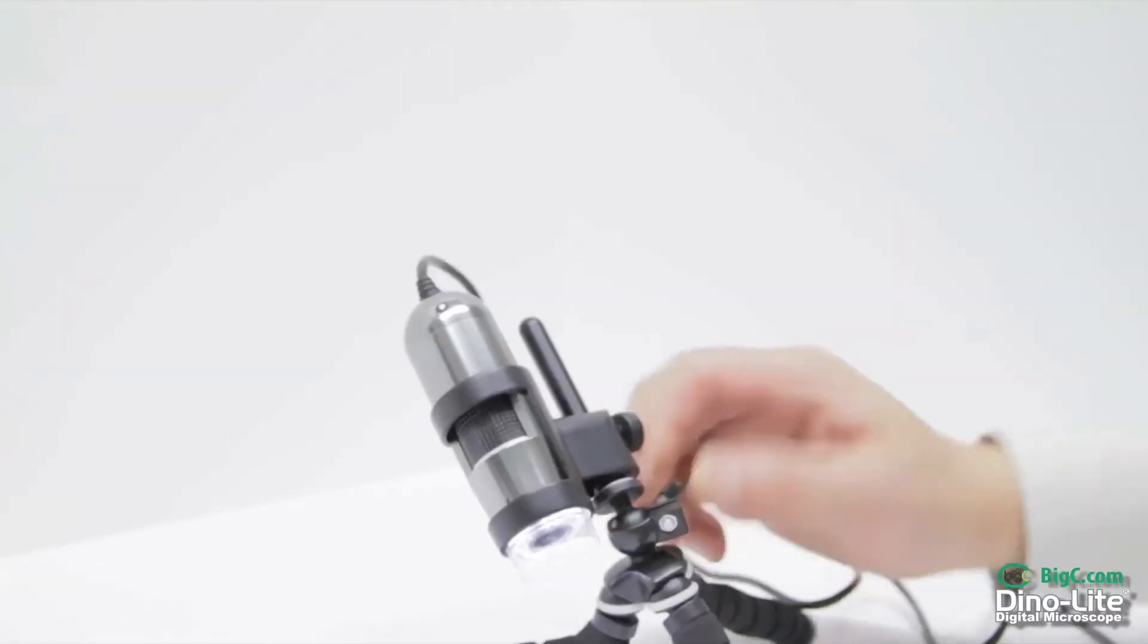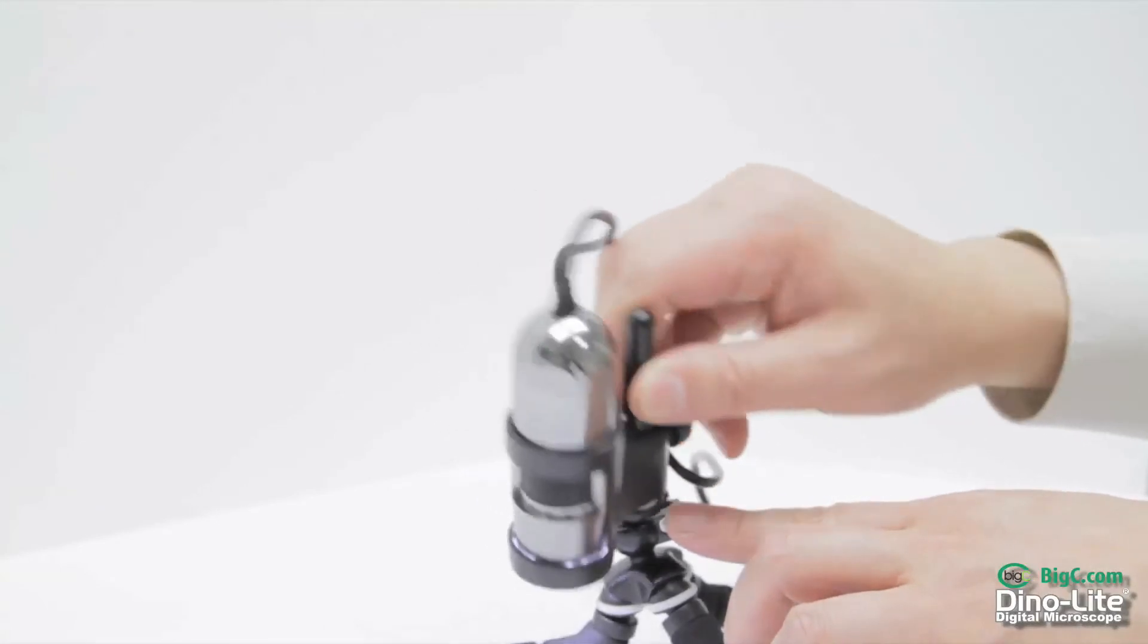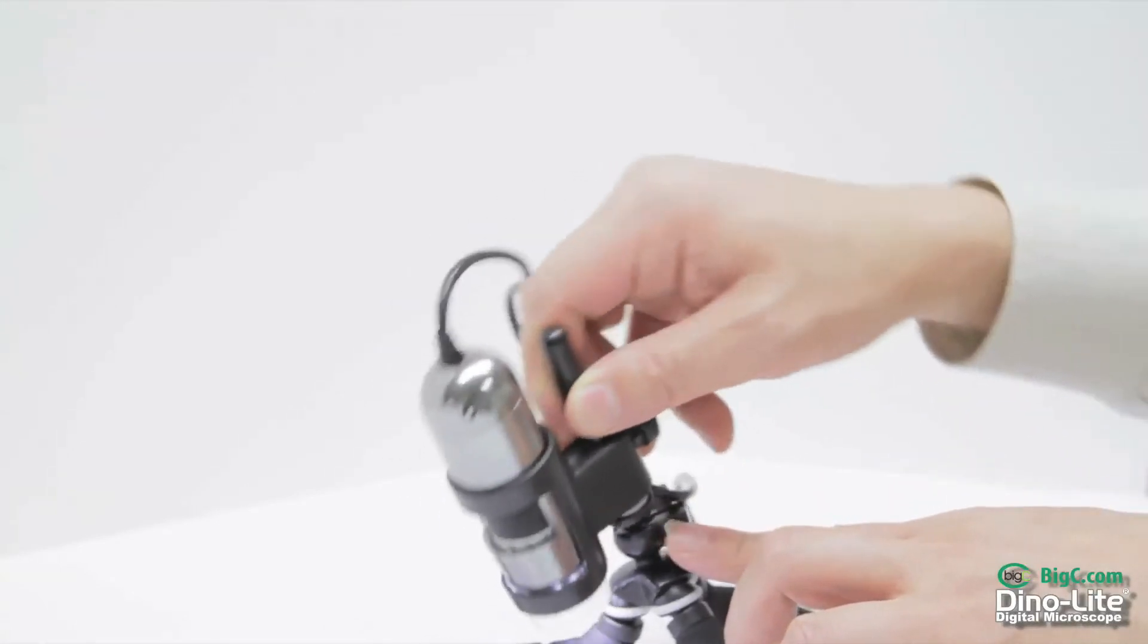By loosening the ball joint clamp, you can achieve different angles. When you have found one that works, tighten the clamp again to lock it into place.